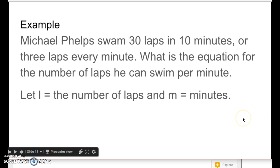So for example, Michael Phelps swam 30 laps in 10 minutes, or 3 laps every minute. What is the equation for the number of laps he can swim per minute? So 3 is our constant because that's 3 per every 1 minute. So we're going to let l equal the number of laps and m equal the number of minutes. What's our equation going to be?